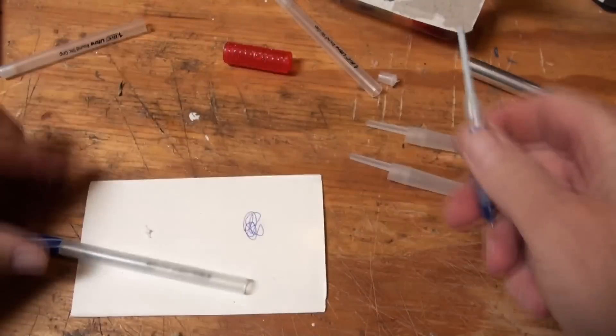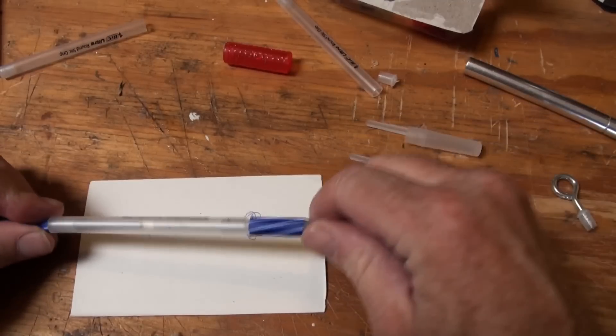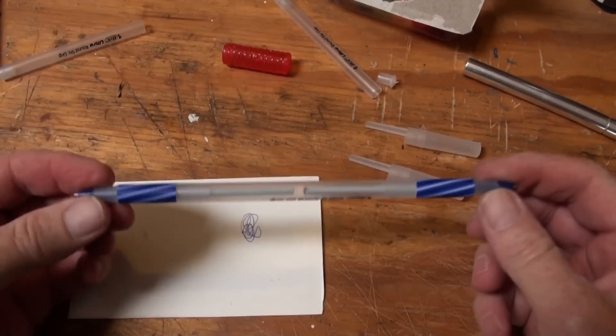One side will fit tight. The other side will be a little bit loose. If the looseness bothers you, you can superglue it.